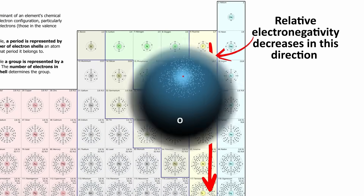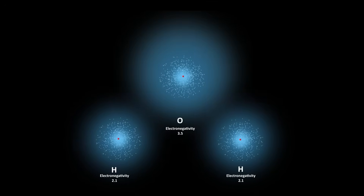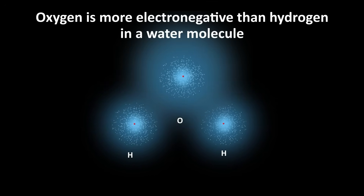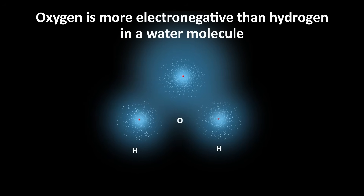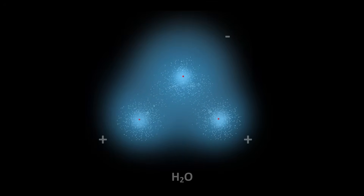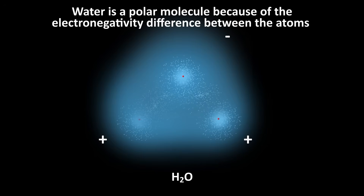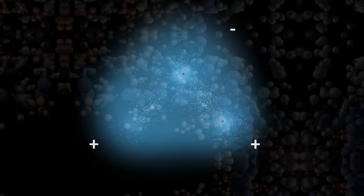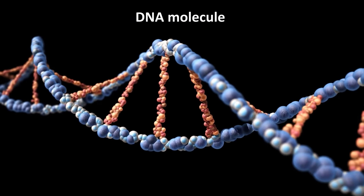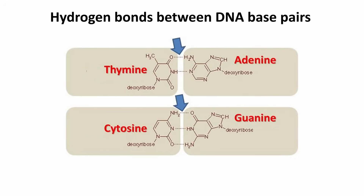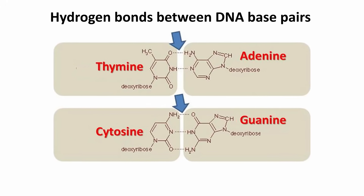The electronegativity difference among atoms within a molecule leads to polarity. For example, in water, H2O, oxygen has a higher electronegativity than hydrogen, leading to the oxygen pulling more electrons towards itself. Consequently, water is a polar molecule — slightly more negative where the oxygen is located, and slightly more positive where the hydrogen is located. Similar polarity allows for hydrogen bonding and other intermolecular forces that are essential in biological molecules like DNA and proteins.